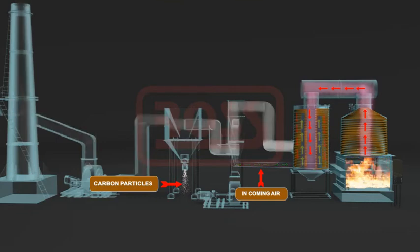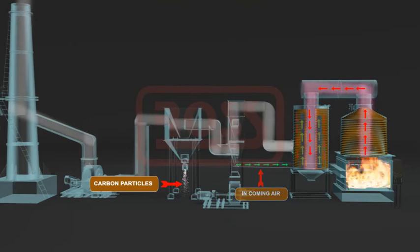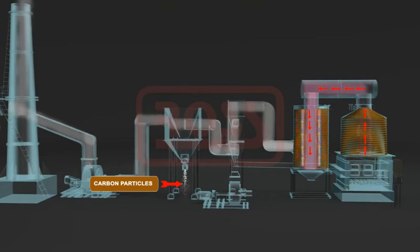Returned thermal oil is passed to deaerator tank to remove any vapor. When thermal oil temperature reaches the set value, ID fan is switched off. The fuel burning rate is suddenly reduced and further rise in thermal oil temperature is thus controlled.